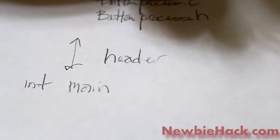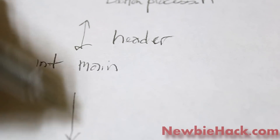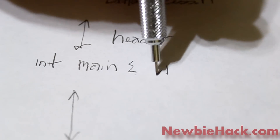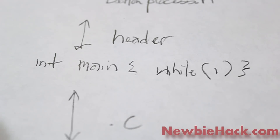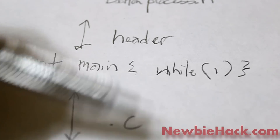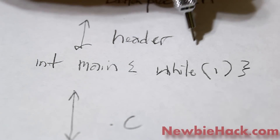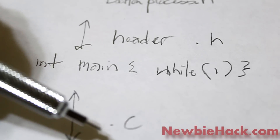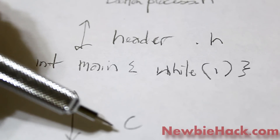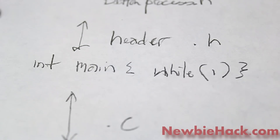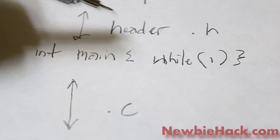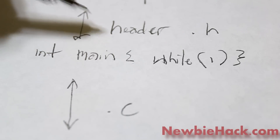That area above the main would be considered the header. Anything below the main — where the while loop is — would be the .c file. So any code down there could be made into a .c file, and the top portion would be a .h header file. When you create libraries, you're essentially creating both: a .h header file and a .c file to contain all the actual running code.